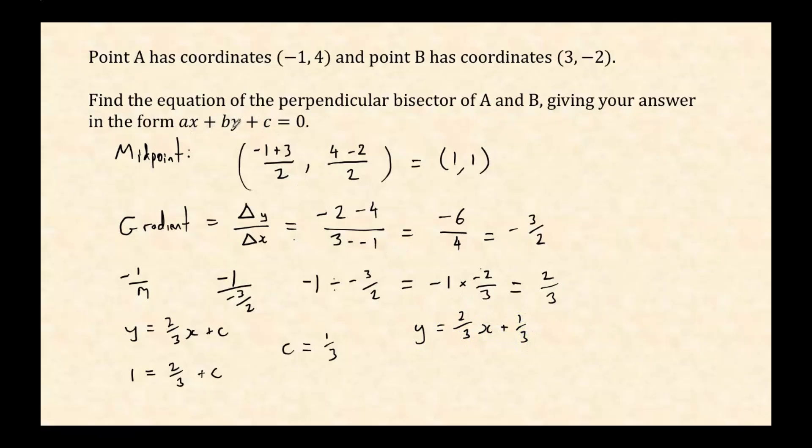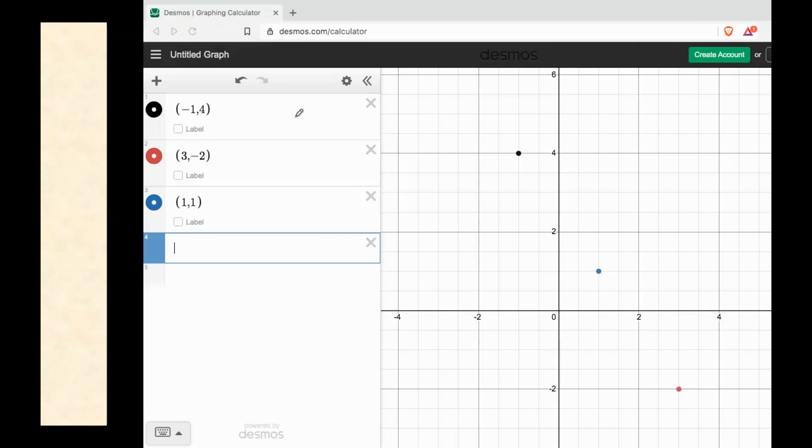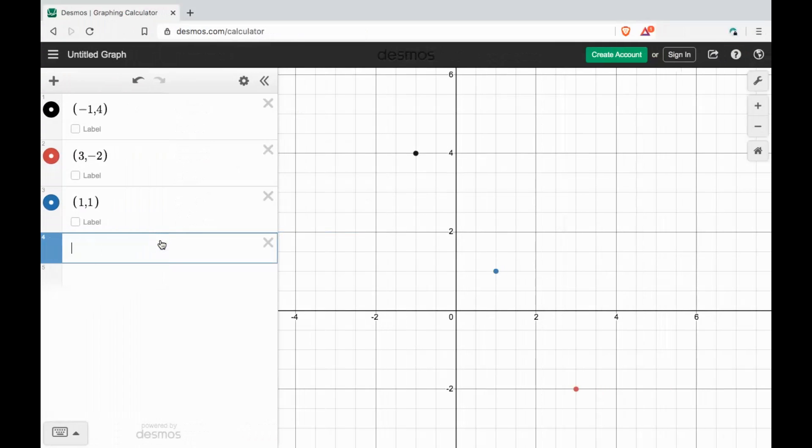Now I'm going to come on to this in a second, but let's just graph that and see if it looks right. So 2/3x plus 1/3, y equals 2/3x plus 1/3. Okay great, that's looking really good. It goes through the midpoint and it looks like it's going at 90 degrees to these two points, the line connecting these two points.